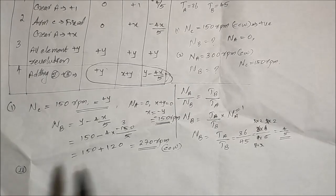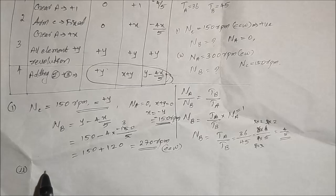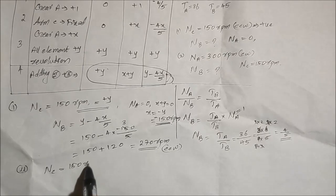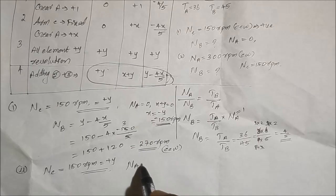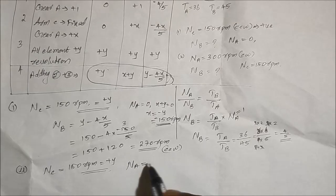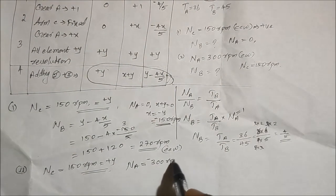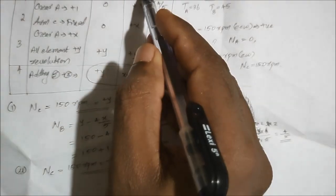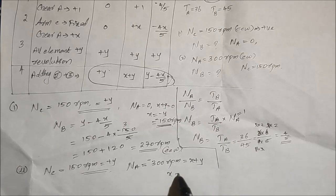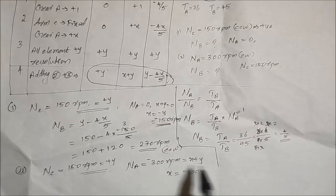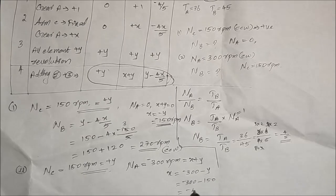This is the second question. Gear A is not fixed; instead, NA equals 300 RPM clockwise. The condition is NC equals 150 RPM, so plus y equals 150. Since gear A rotates clockwise, NA is negative: NA equals minus 300 RPM. Gear A rotation means x plus y equals minus 300, so x equals minus 300 minus y. Substituting y equals 150, we get x equals minus 300 minus 150 equals minus 450 RPM.